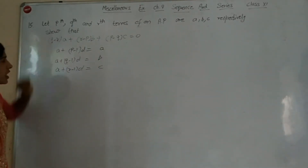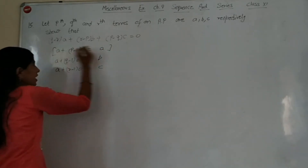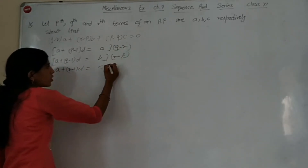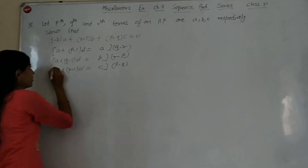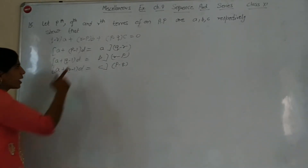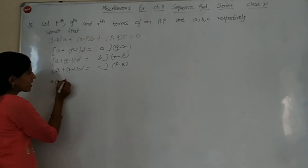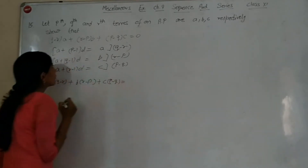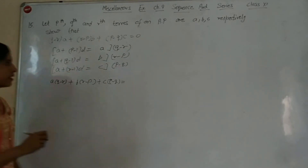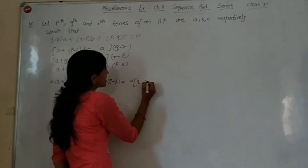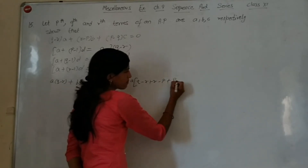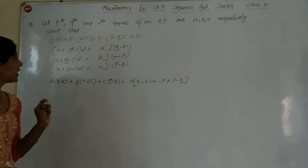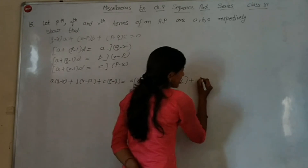Now multiply equation 1 (the A equation) by (Q - R), equation 2 (the B equation) by (R - P), and equation 3 (the C equation) by (P - Q). Adding them, the right-hand side becomes A(Q-R) + B(R-P) + C(P-Q).